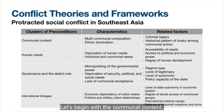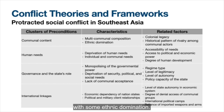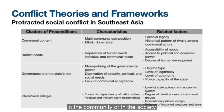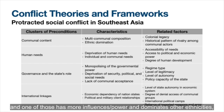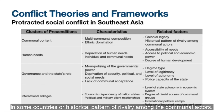The first cluster is Communal Content. The characteristic of communal content means a situation where there are people of multi-communal composition with some ethnic domination — societies with a number of ethnicities where one has more influence and power, dominating the others. Related factors can be derived from colonial legacy in some countries or historical patterns of rivalry among the communal actors.